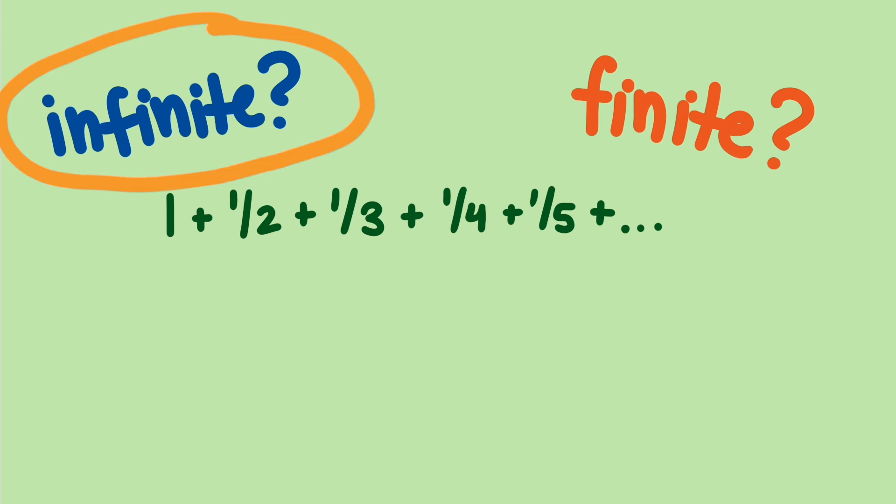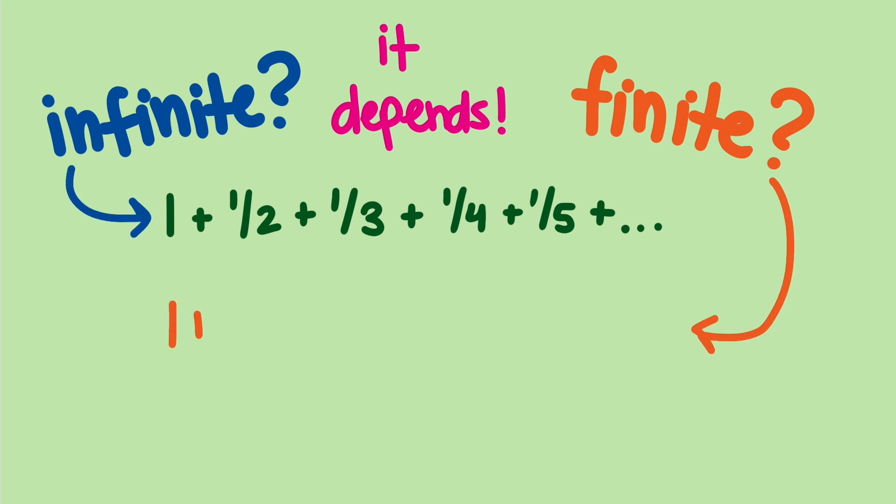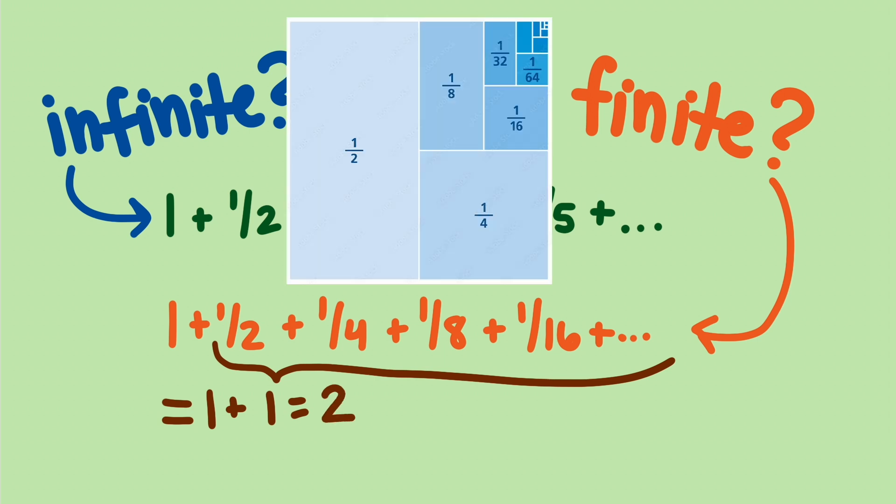Intuition might tell you infinite, but mathematics tells us it actually depends. Some sums of decreasing positive numbers, like this one, do sum to infinity. But others, like this one, actually sum to a finite value, in this case, 2. This diagram actually makes it really easy to see how this infinite series could sum to a finite value.